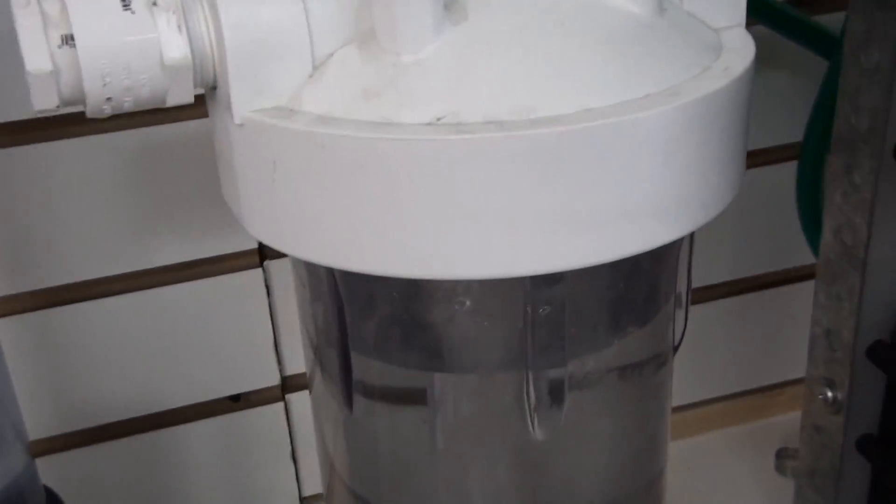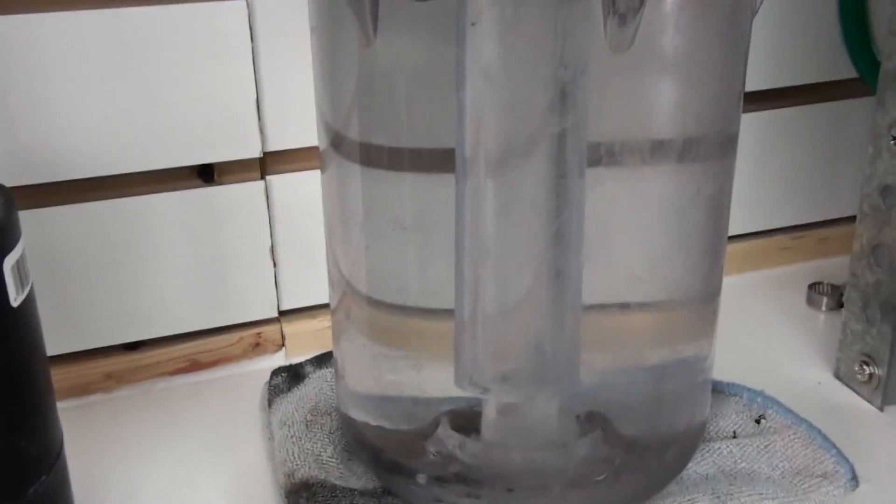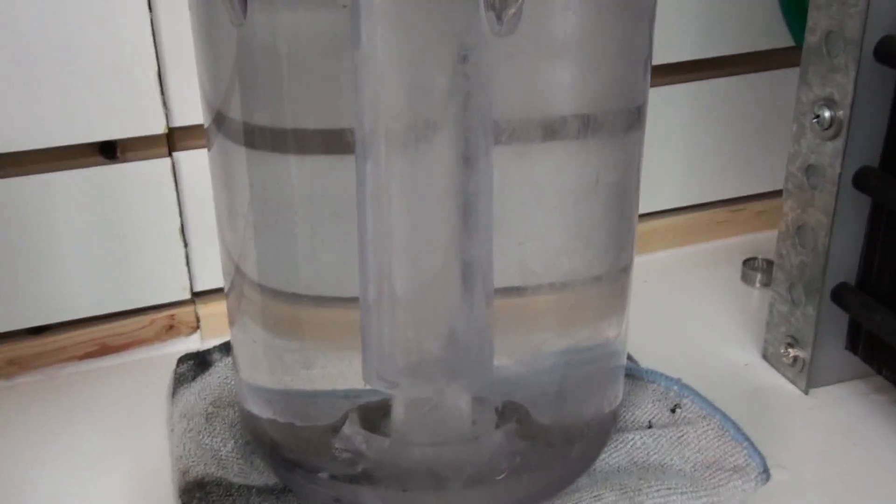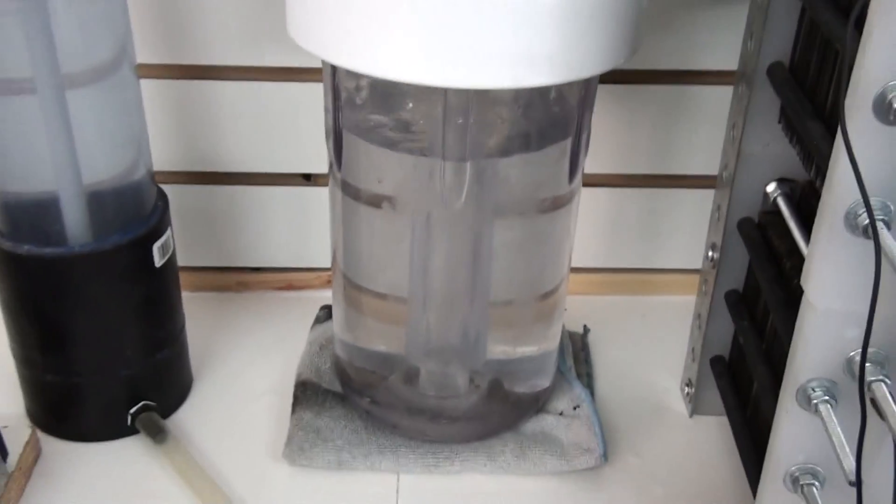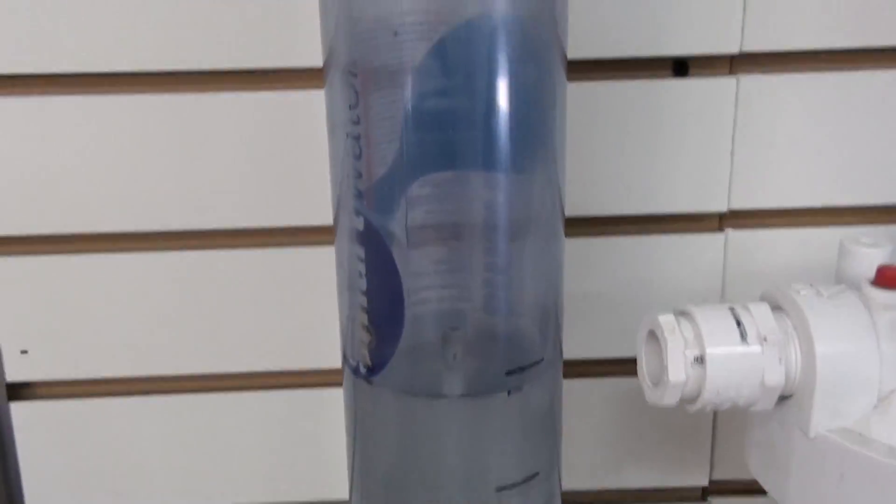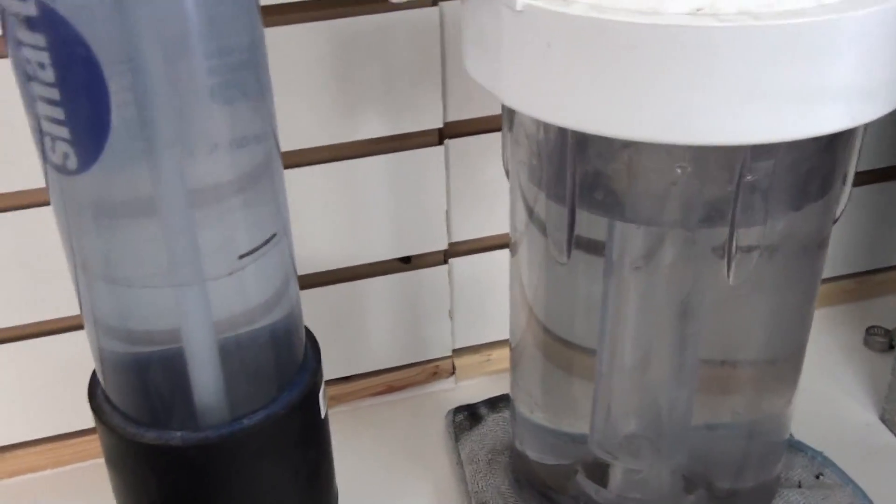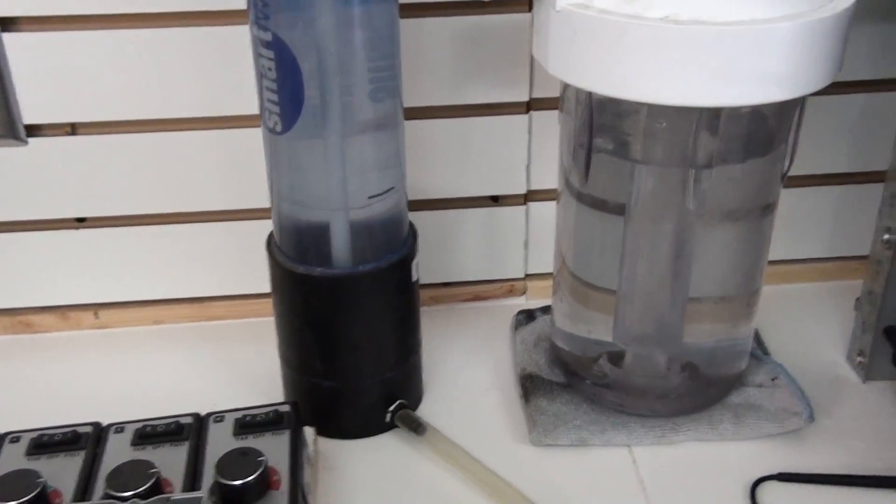Right here we have got a one gallon bubbler. And this one gallon bubbler, if you can see the tube in there, that's a one inch tube. So when the HHO comes through there, it's really gonna hum through there. Right here I've got the old fashioned measurement device. We'll use it to measure the amount of HHO we're producing.